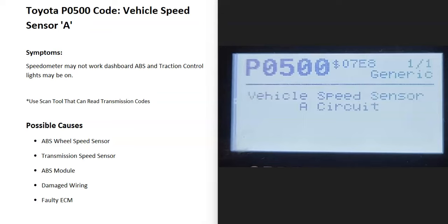Today I'm talking about a Toyota with the P0500 code, what it is and how you go about fixing it. What is a Toyota P0500 code? It's a vehicle speed sensor A.